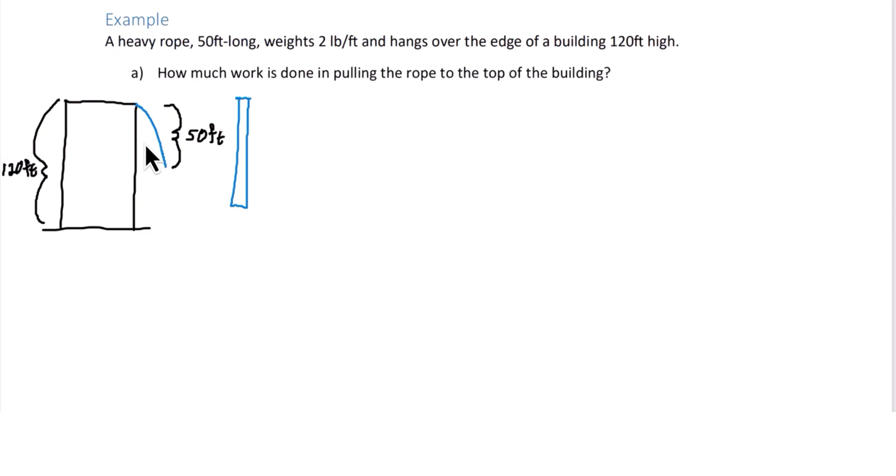Similar to how we integrated by breaking up integration into n rectangles, we're going to break this rope up into n different sections, just an infinite number of sections here. And we're going to focus on one of those sections. Let's call that width delta x. Now let's talk about the work required to lift this tiny little section to the top of the building.